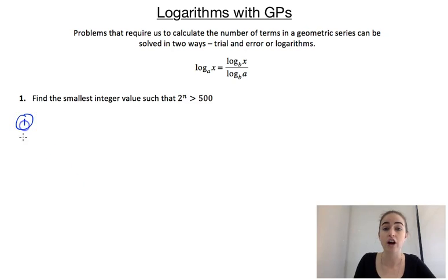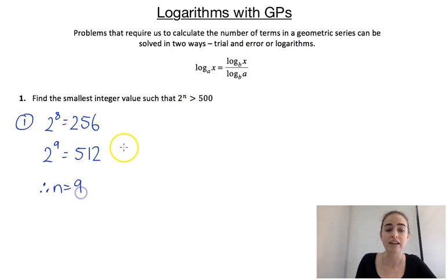Our first way of solving it is just trial and error. You're going to pick numbers to plug into n and see what your answers are. For example, if we pick 2^8, that's going to give us 256, which is too small. If we try 2^9, that's going to give us 512, which is bigger than what we wanted. So because 8 was too small and our next whole number 9 gave us an answer that was over 500, therefore n equals 9 is the smallest integer that satisfies this inequality. So that's our first method, trial and error.